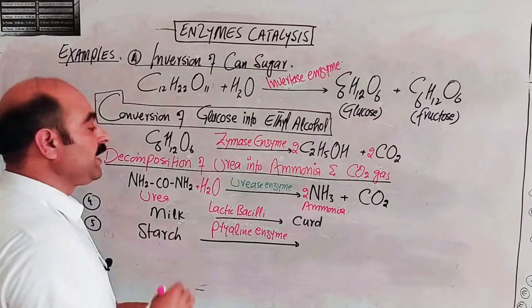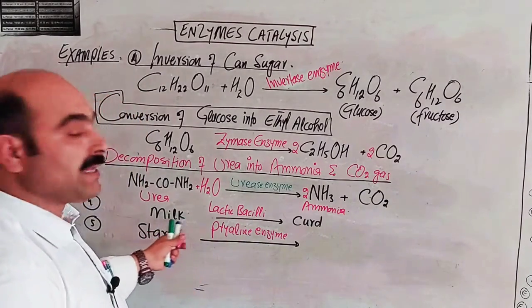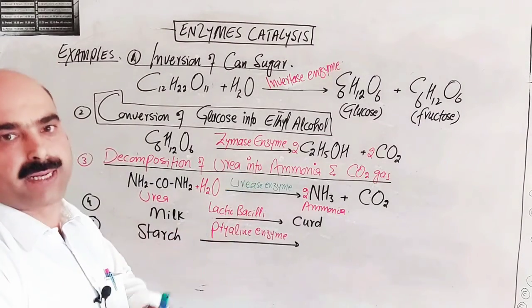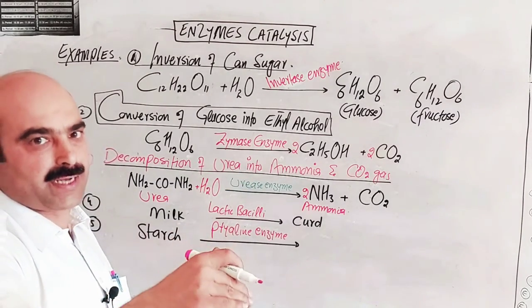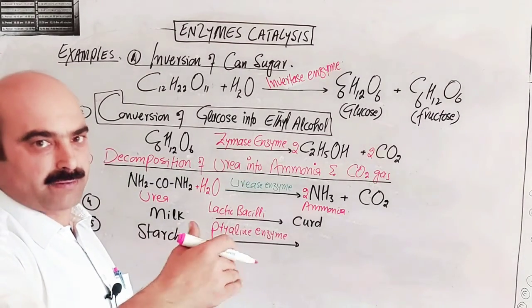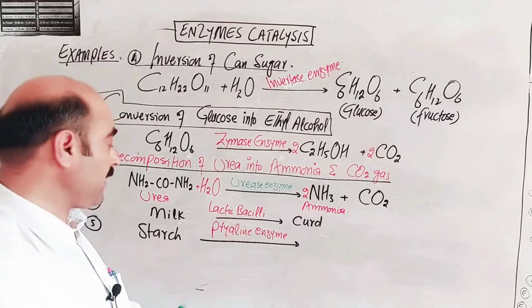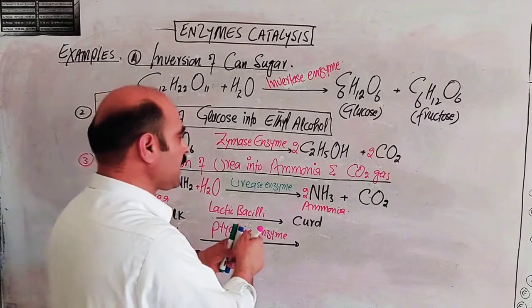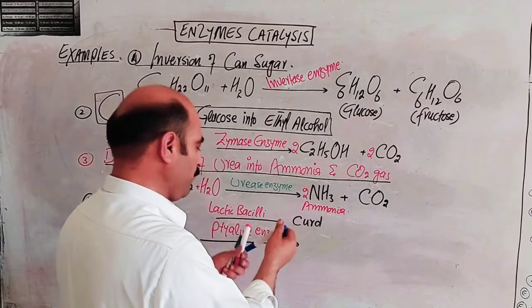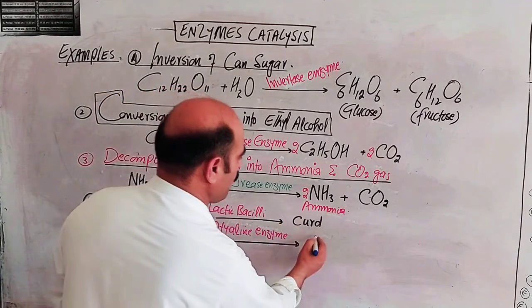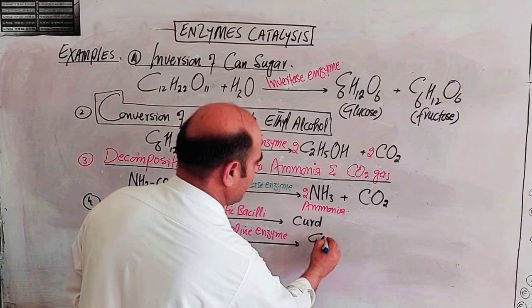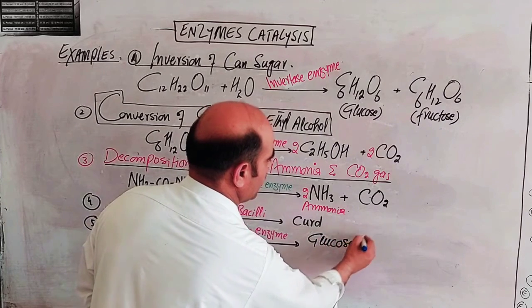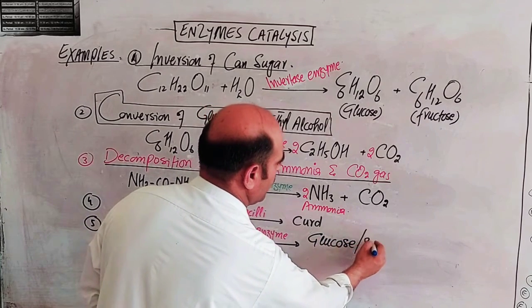The large complex starch molecules are broken down in the small intestine into diffusible blood sugar. Glucose is the final product.